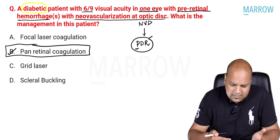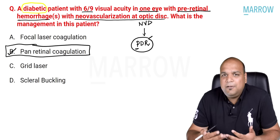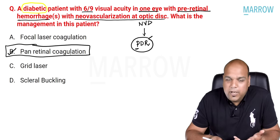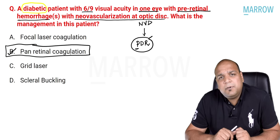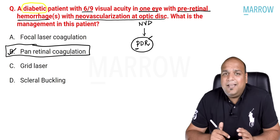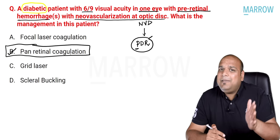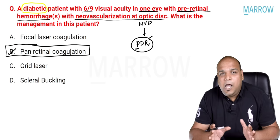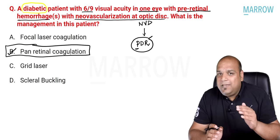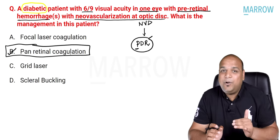PDR — the proliferative P4 problem — and the treatment is P4: pan-retinal photocoagulation. The options may confuse with focal laser coagulation, but once neovascularization has started — whether at NVD or NVE (neovascularization elsewhere) — there is severe hypoxia in all the retina. We never do focal laser; we do pan-retinal photocoagulation. The two treatment options for PDR are pan-retinal photocoagulation (treatment of choice) and anti-VEGF drugs.